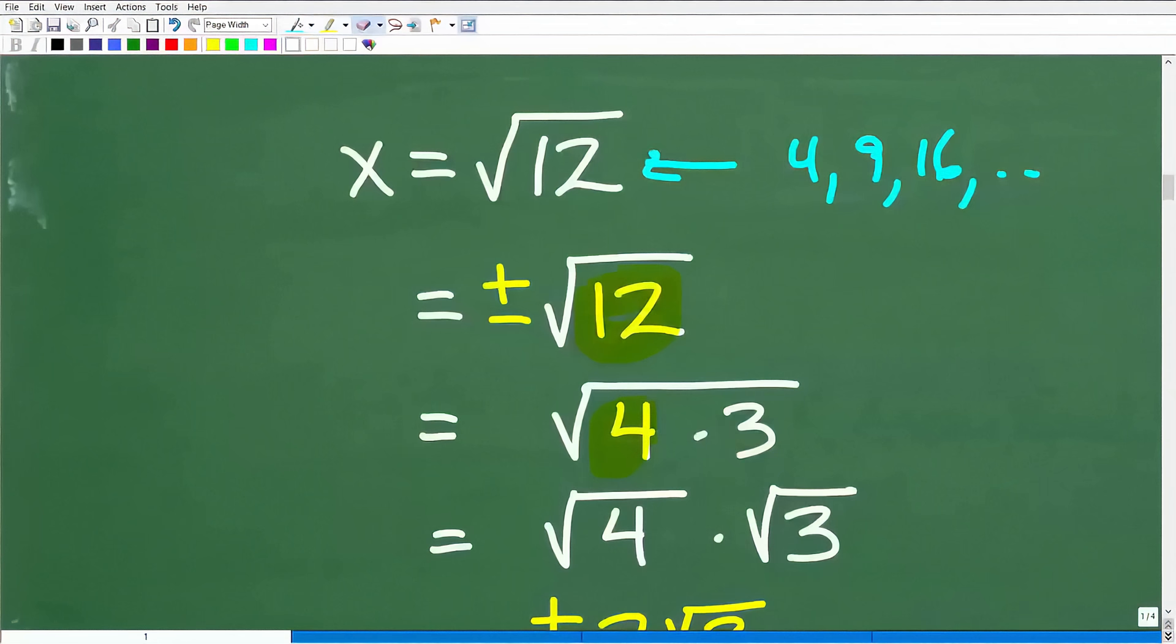So we can write 12 as 4 times 3. But here, 4 is a perfect square. So we're not interested in 6 times 2 because 6 and 2 are not perfect squares.